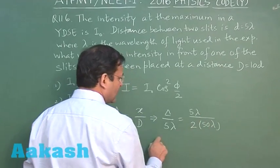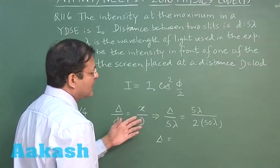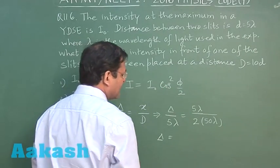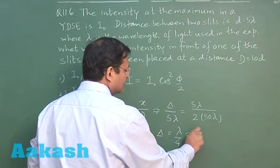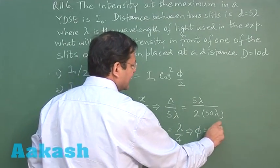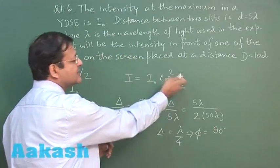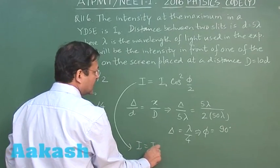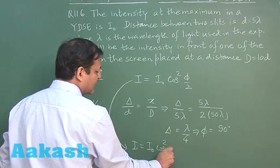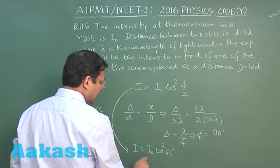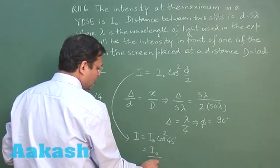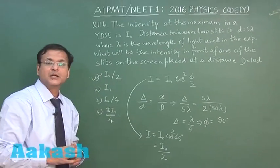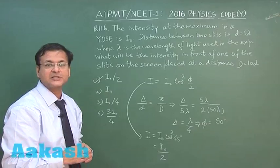Now if you calculate delta what do you get? You are simply getting delta is equal to lambda by 4. And lambda by 4 corresponds to angle phi as 90 degree. So this 90 degree is to be substituted here. So if you calculate the intensity I, this becomes I0 cos square 45 degree. What is cos 45? This is 1 by root 2. So square of that makes it I0 by 2. So I will be marking answer 1 for this question 116. Now let us switch over to next question, that is question 117.